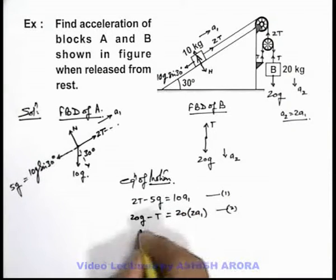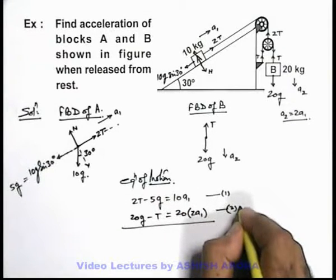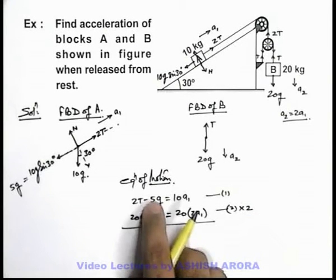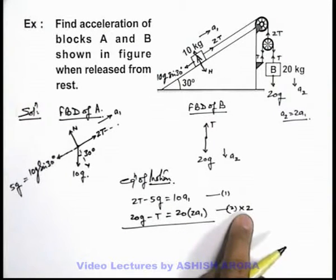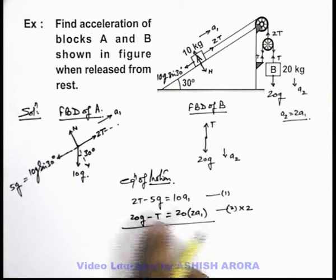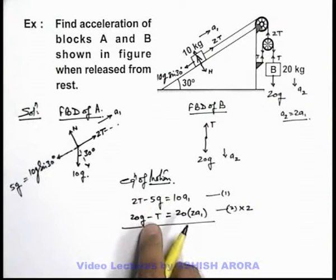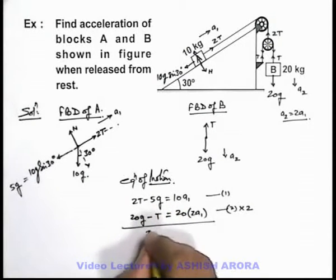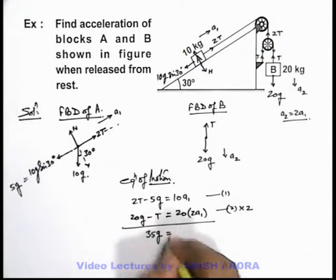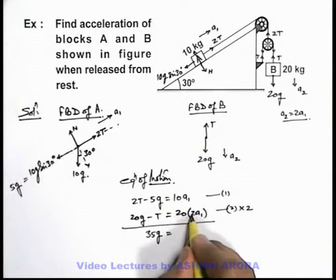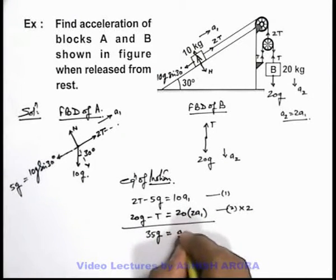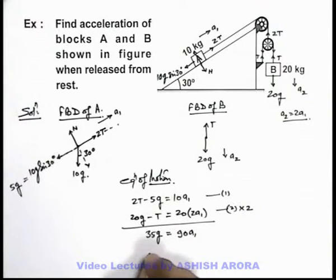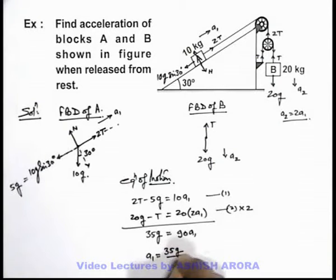We're required to find the acceleration. We can multiply equation 2 by 2 and then add the two equations. Due to multiplying equation 2 by 2, the tension factor gets cancelled out. On adding the two equations, this gives us 40g − 5g, that is 35g, equal to 40a1 + 10a1, which is 90a1. So the value of acceleration a1 is equal to 35g divided by 90.